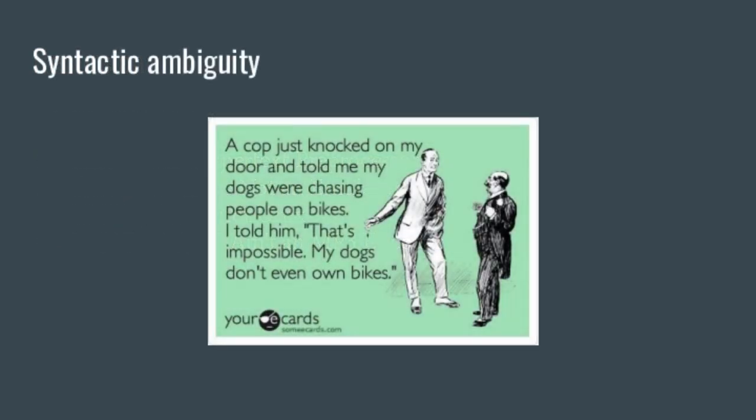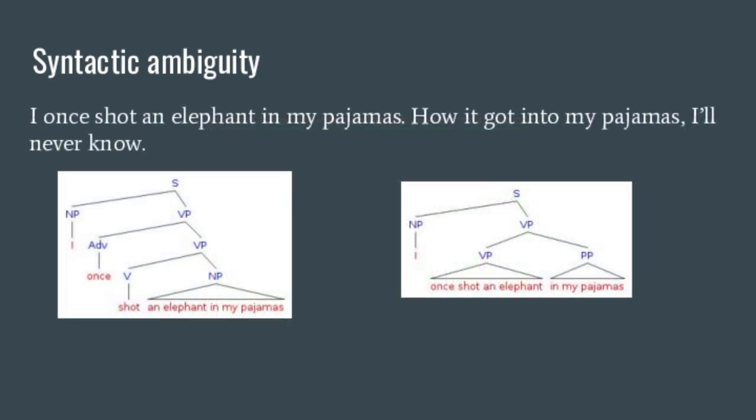Syntactic ambiguity: 'A cop told me the dogs are chasing people on bikes.' I told him that's impossible — my dogs don't even own bikes. The ambiguity is whether 'on bikes' modifies 'people' or the chasing. Another famous example: 'I once shot an elephant in my pajamas. How he got in my pajamas, I'll never know.' One reading is you were wearing pajamas; the other is an elephant wearing pajamas. These two interpretations have two different syntactic structures — phrase structure helps explain ambiguity.